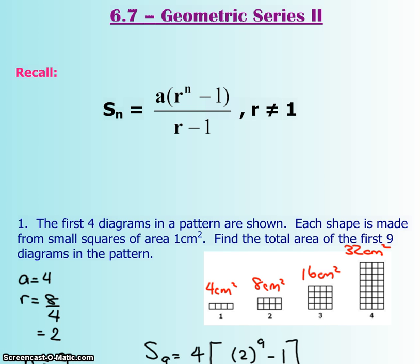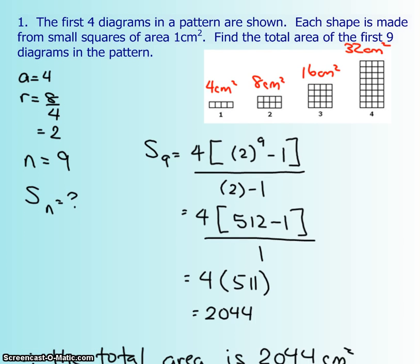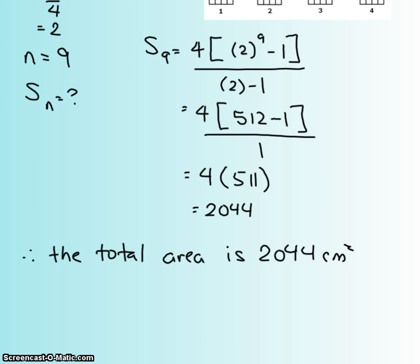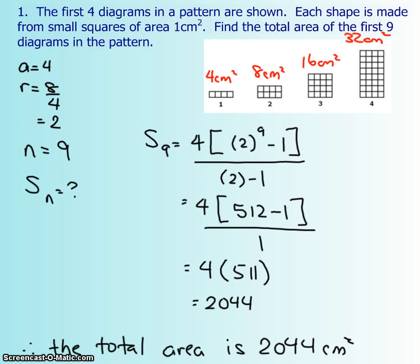We're going to go over two questions. The first four diagrams in a pattern are shown. Each shape is made from small squares of area one centimeter squared. Find the total area of the first nine diagrams in the pattern. So here are the term numbers, or the diagram numbers, and they don't want the ninth one. They actually want the sum total of all nine.